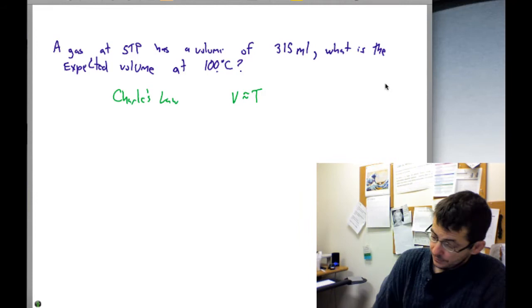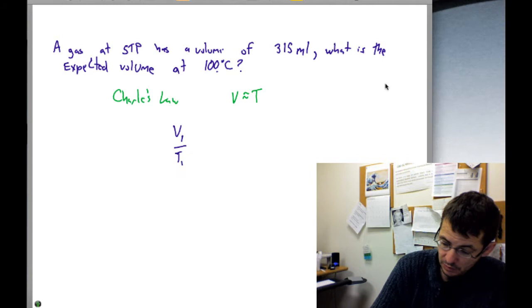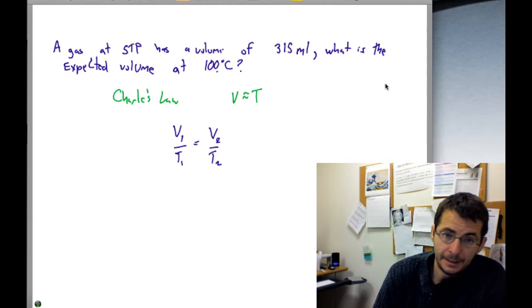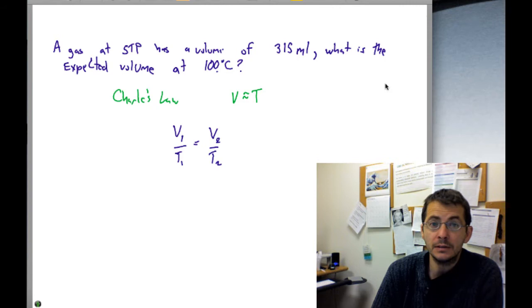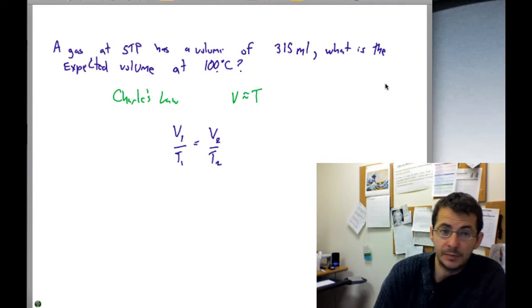And we can codify that even more by saying V1/T1 is equal to V2/T2. Now, we can look at this particular problem. A gas at STP has a volume of 315 milliliters. What is the expected volume at 100 degrees C?